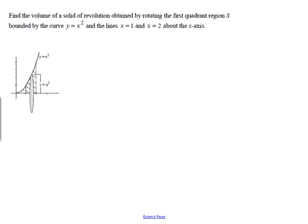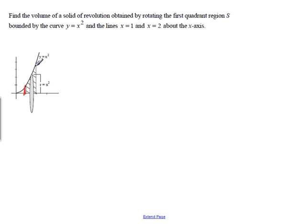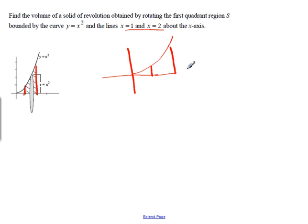We're going to look at what happens when you rotate a solid around an axis. We're going to start off by rotating around the x-axis. We're going to take the curve y equals x squared from 1 to 2, and we're going to rotate that around the x-axis.